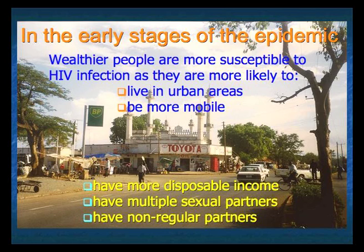One key observation from the start of the epidemic — which we sometimes call the pandemic now — is that wealthy people were more susceptible to infection in its early stages. The reason is they were more likely to live in urban areas where infection was concentrated, were more mobile and travelling to places with more cases, had more disposable income to go out and socialise, and were more likely to have multiple sexual partners and non-regular partners.